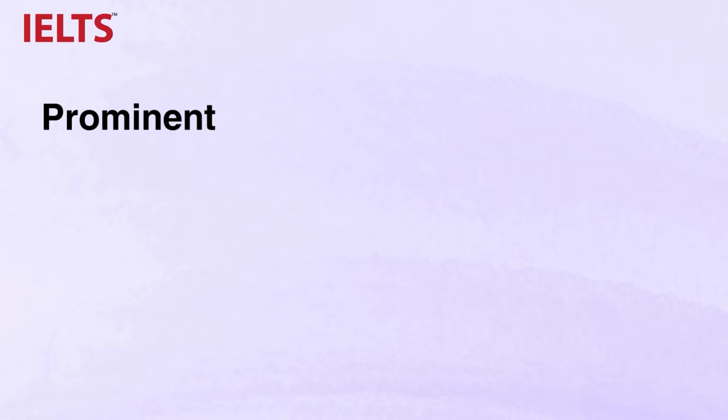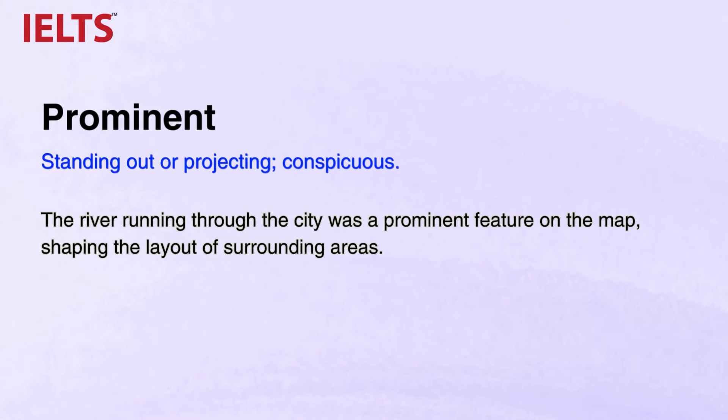Up next, there is PROMINENT, meaning standing out or projecting — conspicuous. The river running through the city was a prominent feature on the map, shaping the layout of surrounding areas. This word describes features that are noticeable or stand out on the map, such as prominent landmarks or prominent geographical features.